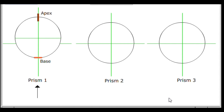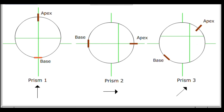Similarly, in prism 2, the base-apex bisector of the apical angle is placed parallel to the vertical cross hair, and the prismatic effect changes only the apparent position of the vertical cross hair, which is deviated towards the apex of the prism. In prism 3, the prism has been positioned such that the base-apex bisector of the apical angle is at an angle of 45 degrees to the horizontal cross hair. In this position, the prismatic effect will deviate both the horizontal and vertical cross hairs towards the apex of the prism.